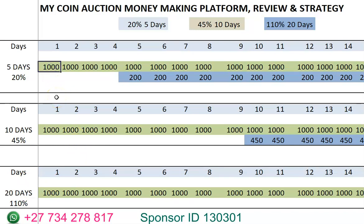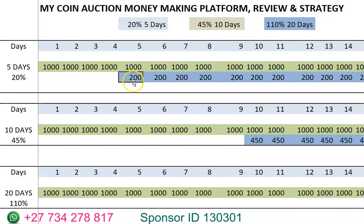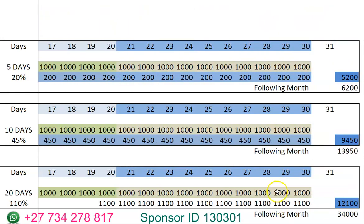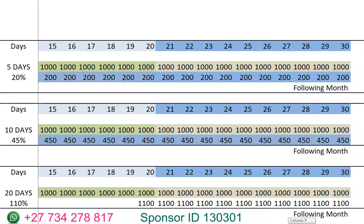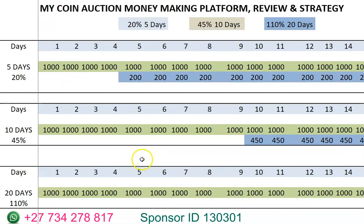Using 1,000 rand as an example: if on the first day you put in 1,000 rand, second day 1,000, third day 1,000, fourth day 1,000, and on the fifth day you put in 1,000 rand, you're going to be taking out 200 rand. If you continue putting in 1,000 rand every day, you'll be taking out 200 rand at a time, and at the end of the month you would have made 5,200 rand. If you continue into the following month without stopping, you'll be able to make 6,200 rand as profit on top of your initial amount.